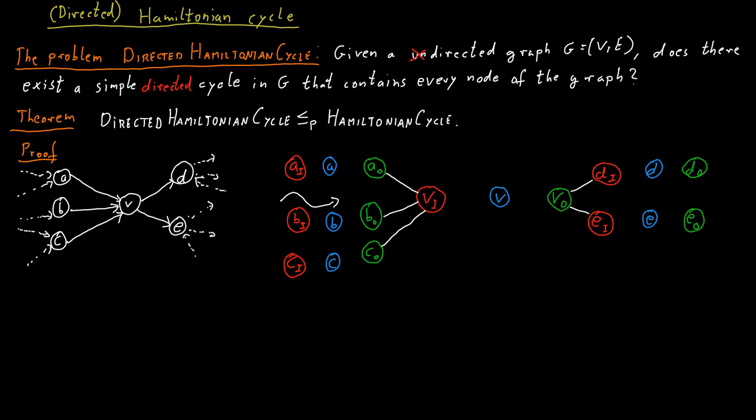And then we also connect VI to V and V to VO. If we do this for all the nodes in the graph, we increase the number of nodes by a factor of three. But that's a very small blow-up.